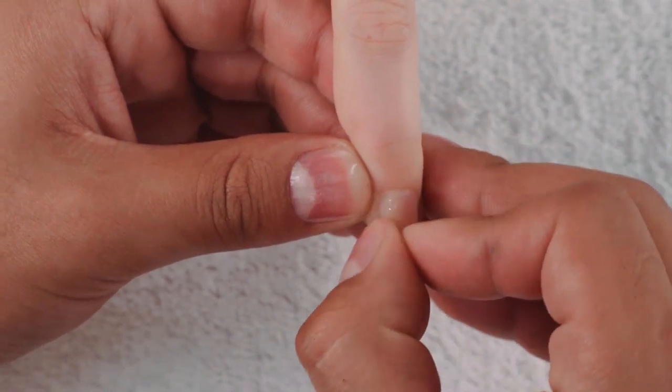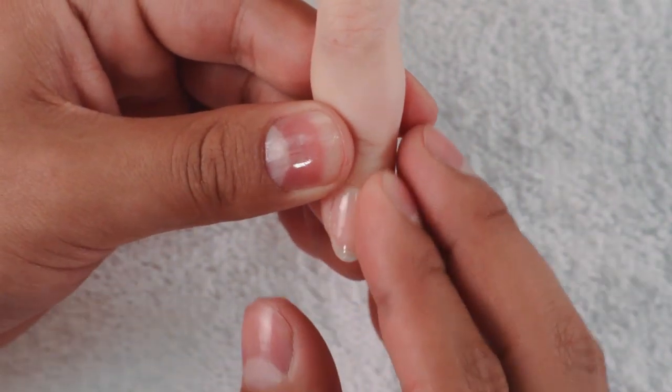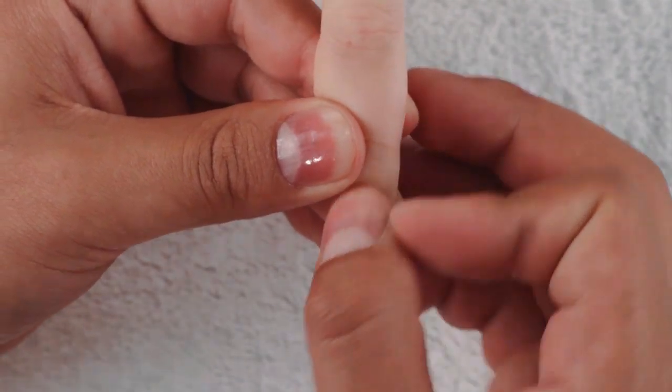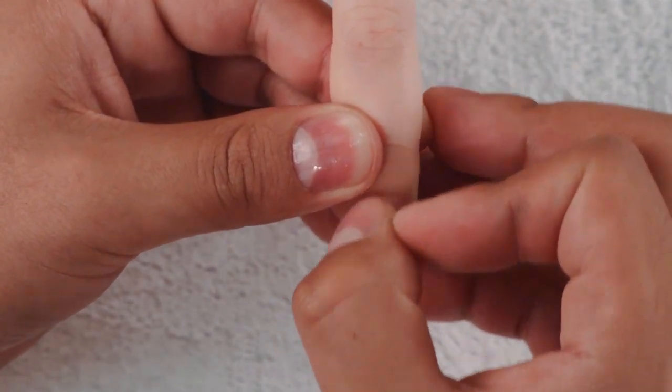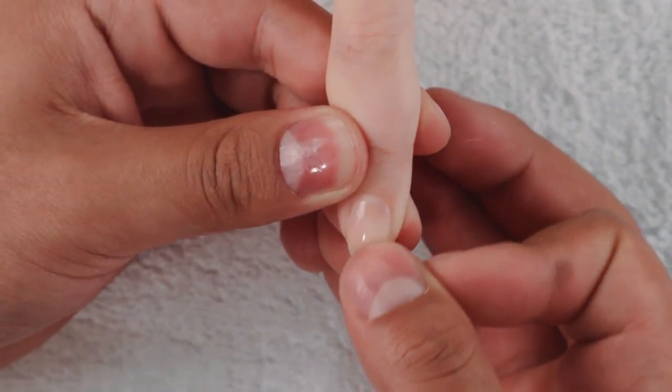To make sure it's completely adhered to the nail plate you're going to want to come back with your fingers and press the entire nail plate and you can also this way remove any bubbles.